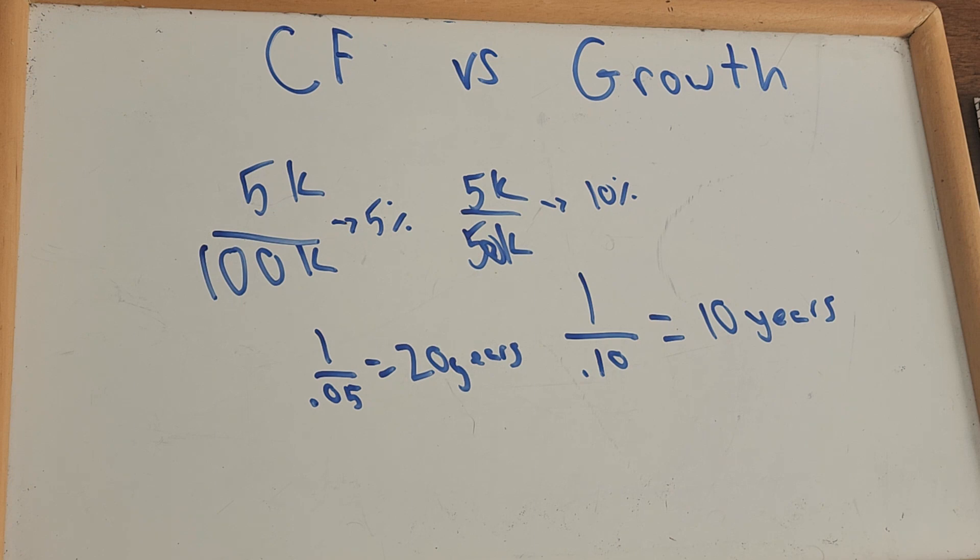Make sure you stick around and watch part two of this video as I actually compare with real numbers over 20 years. What does a growth property look like in a market of high appreciation and low cash flow? And what is its future value going to look like in 20 years versus the cash flow portfolio where we purchase in a very economically deprived area, produce a lot of good cash flow, but see very little appreciation.